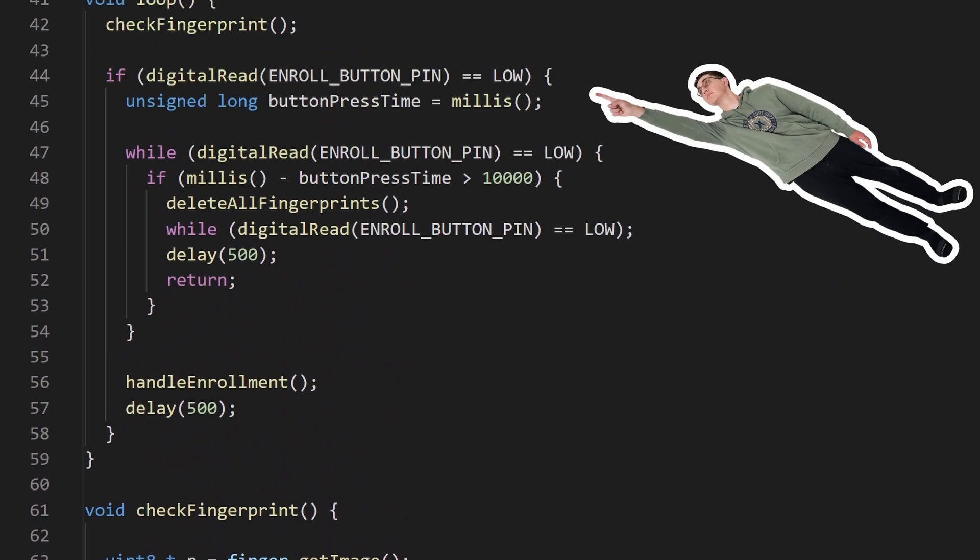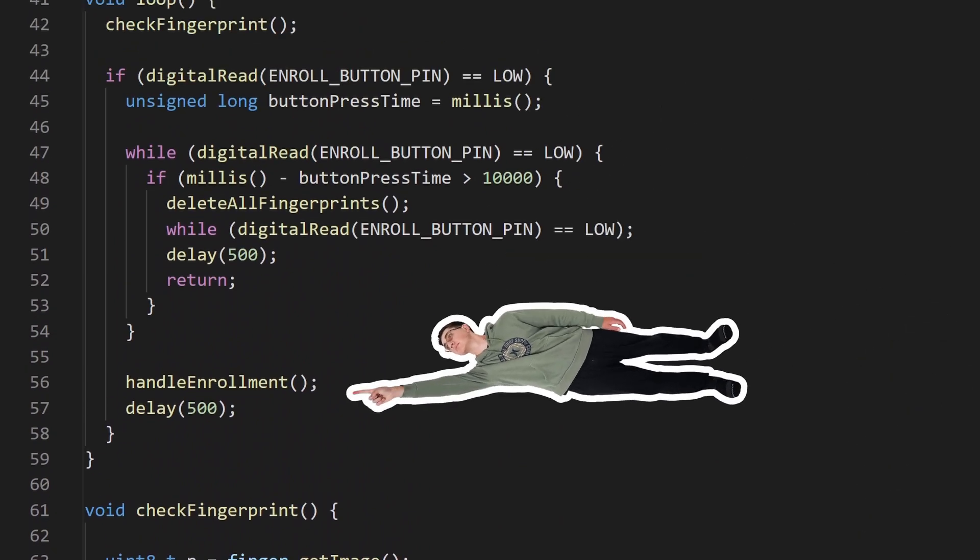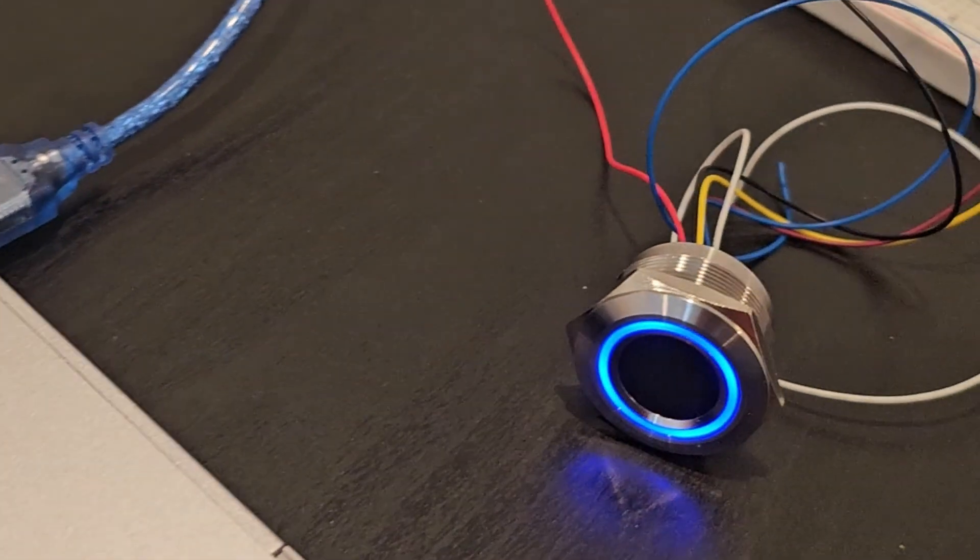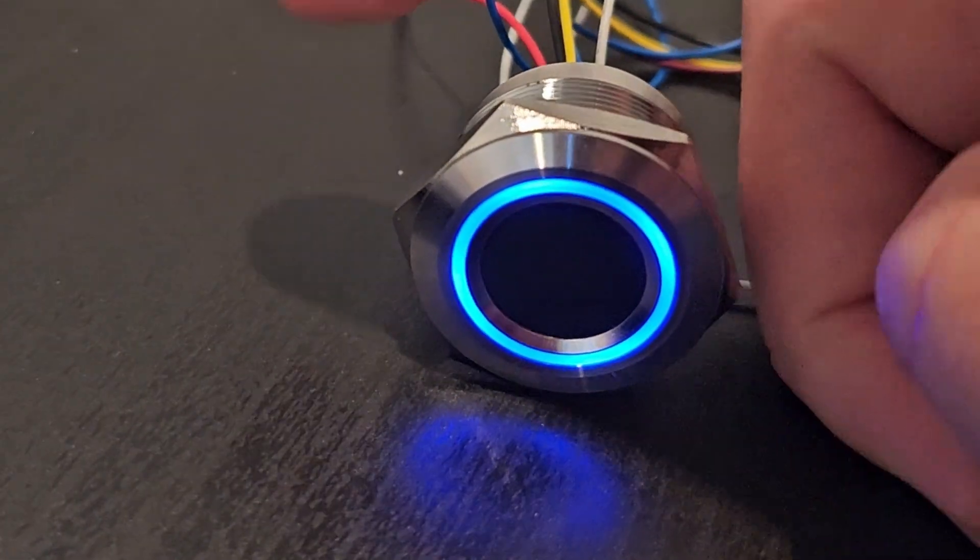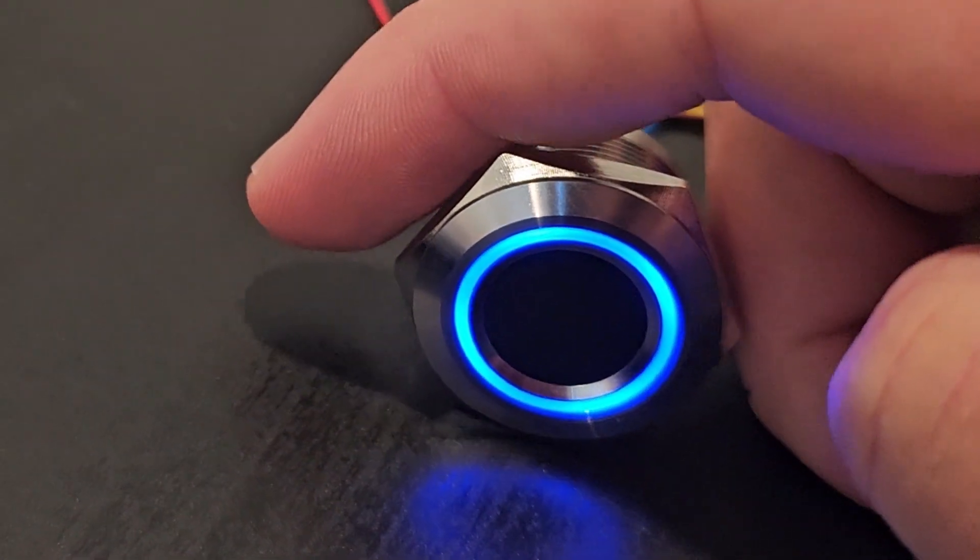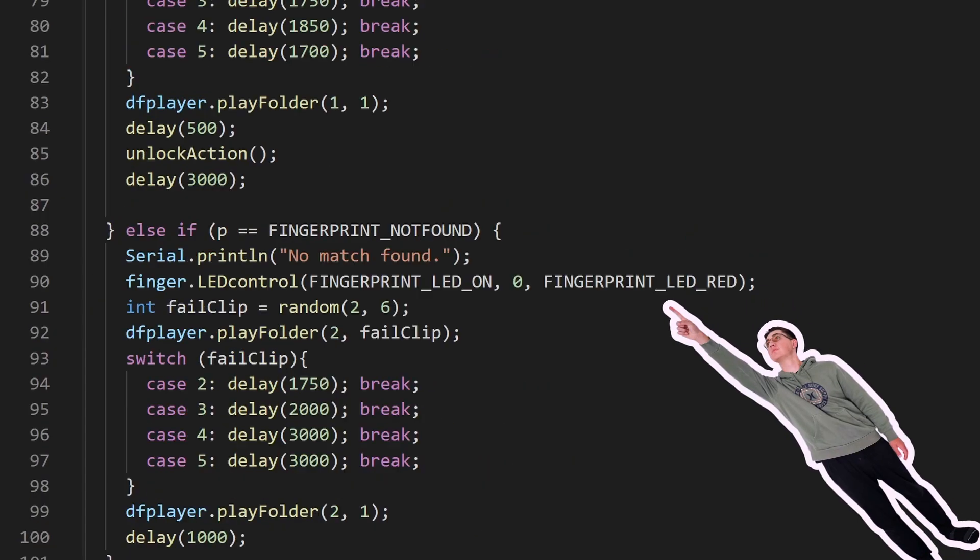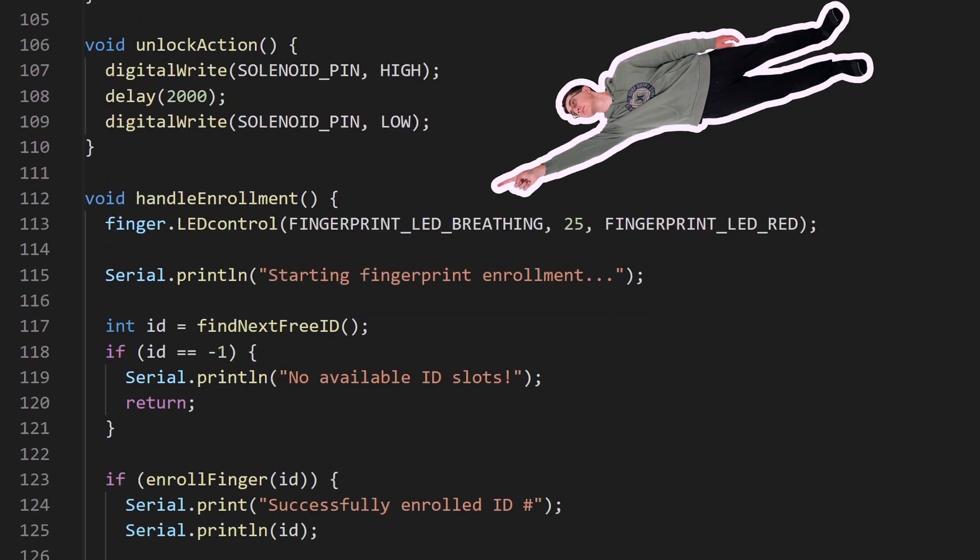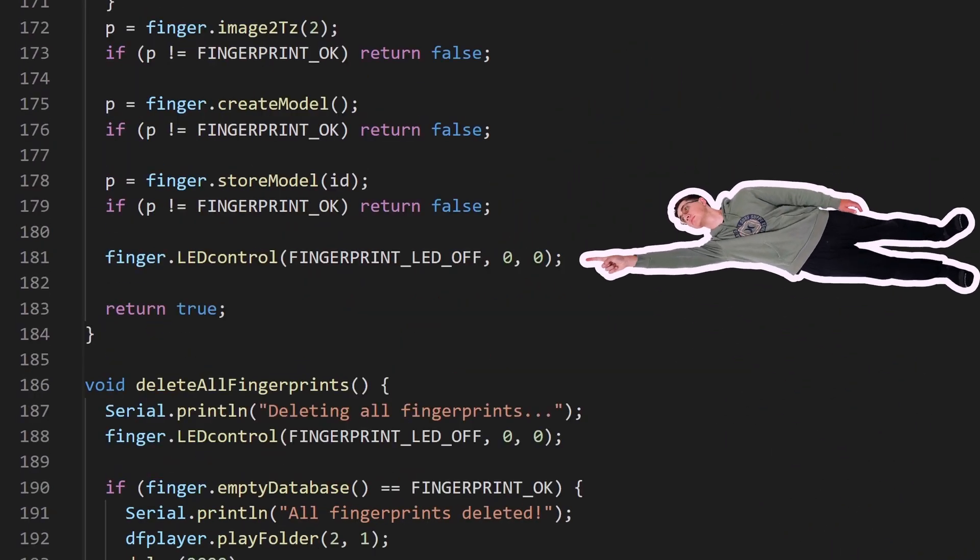I also added in some logic to monitor the button. A quick press will put the device into an enrollment mode, allowing us to add new fingerprints. But if the button is held down for more than 10 seconds, it wipes all the stored prints and starts fresh. And one more detail: I added a few lines to give life to the fingerprint scanner's LEDs. They should be purple when idle, red when a fingerprint gets denied, blue when access is granted, blinking red when we're adding a new print, and lights off is telling the user to remove their fingerprint from the scanner altogether.